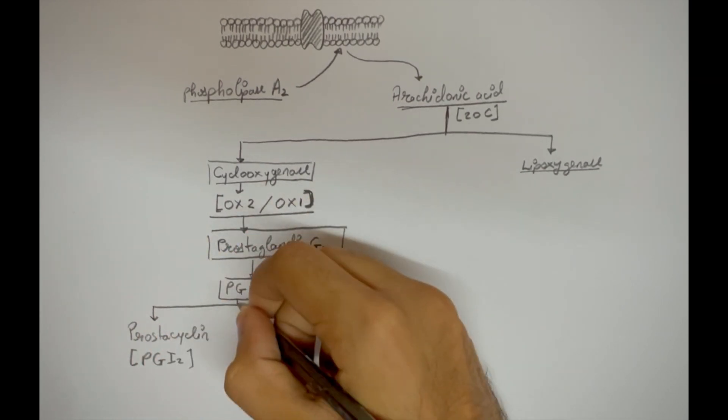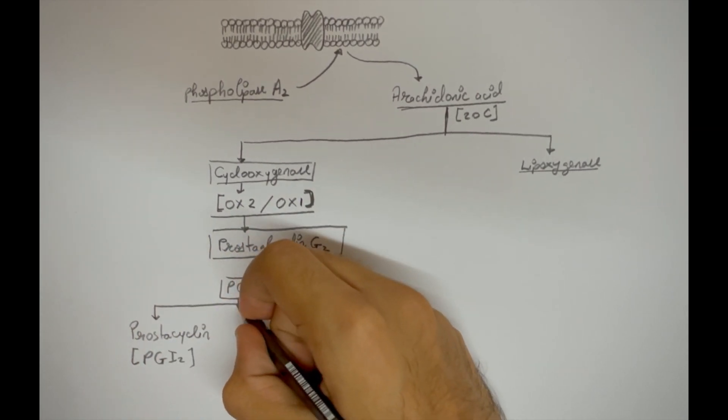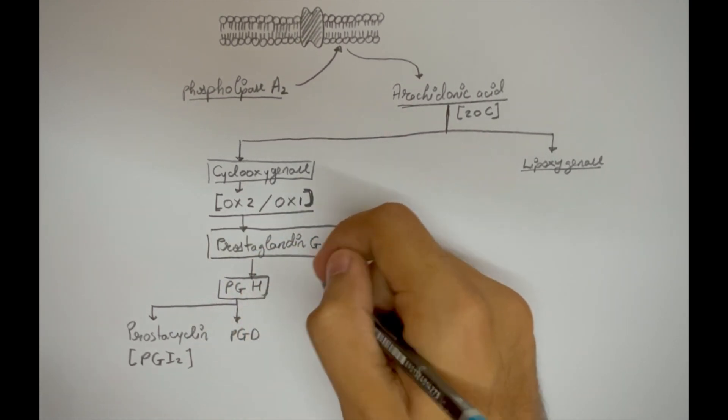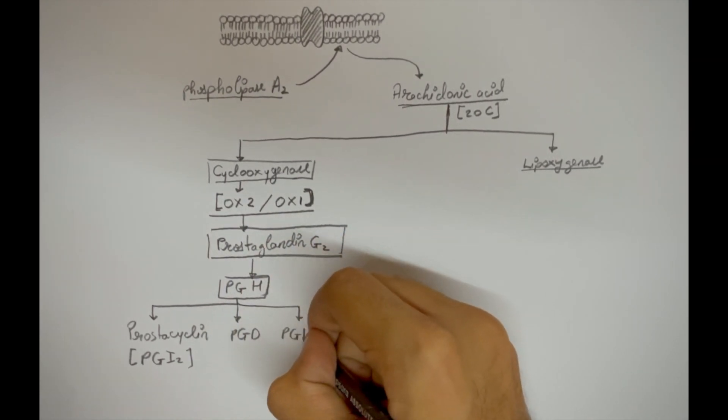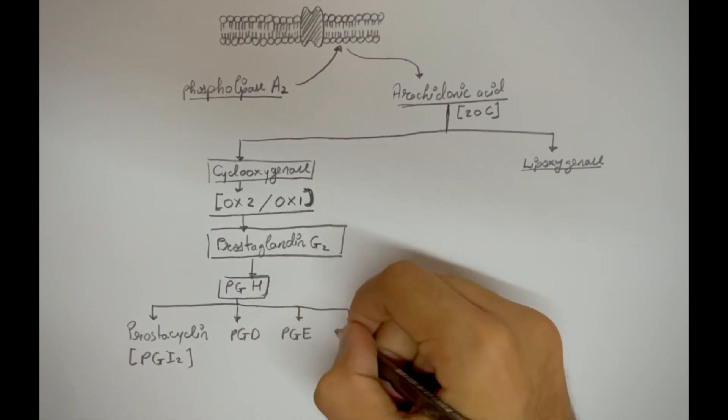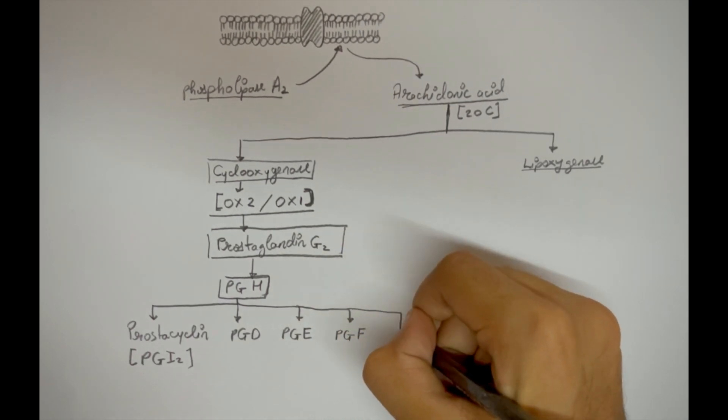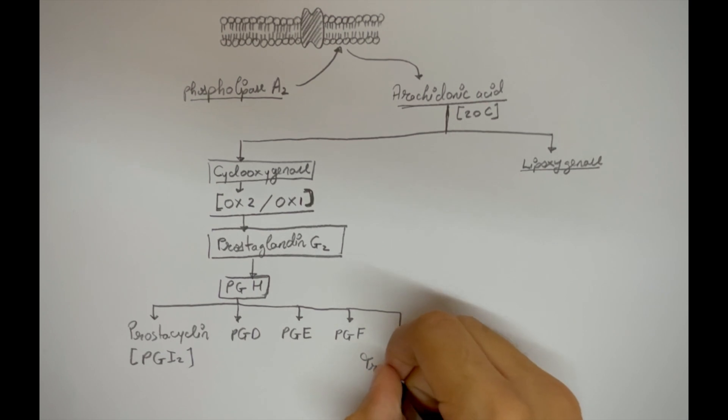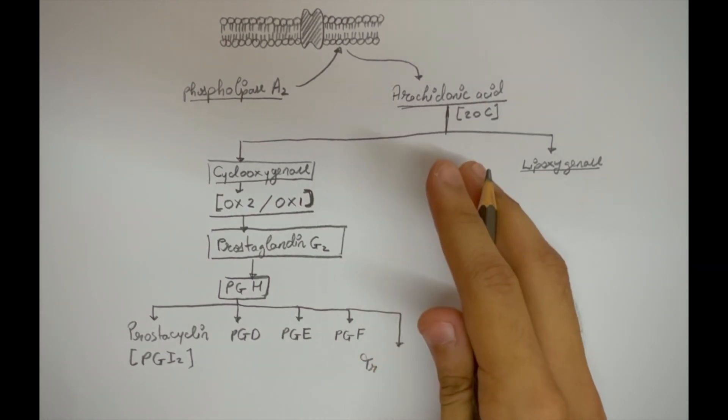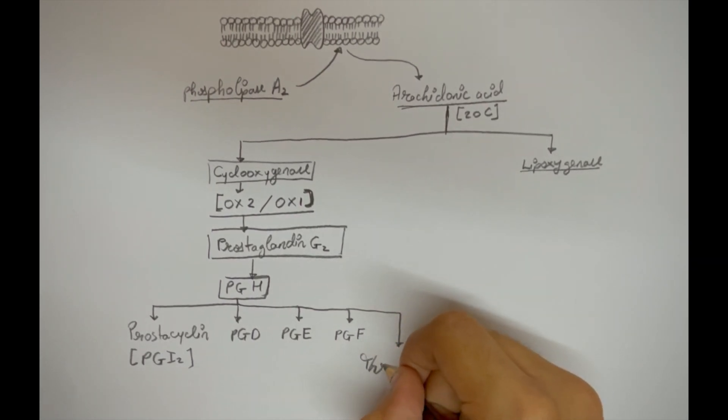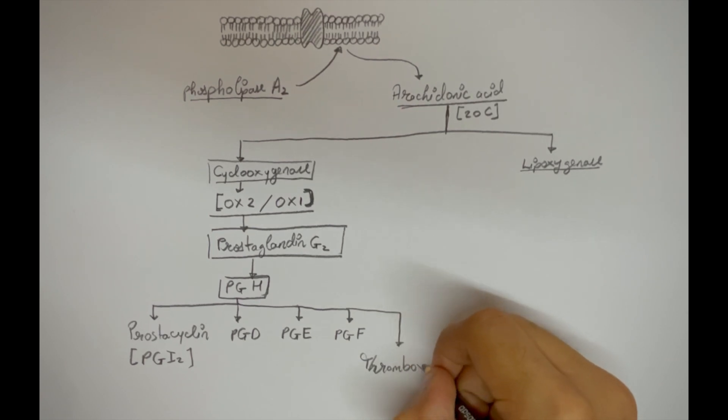Apart from these, there can be prostaglandin D, which is PGD, PGE, and PGF. And finally, the last prostaglandin is thromboxane, also termed thromboxane A2 or TXA2.